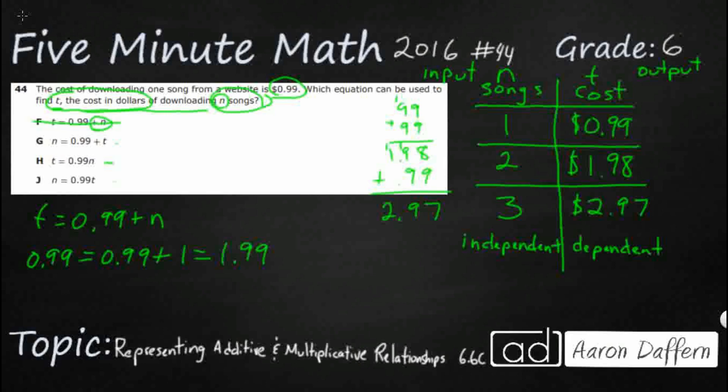Let's look at G. G has n equals 99 cents plus t, which is another 99 cents if we're looking at the first one. That's not going to work because 99 and 99 made $1.98. So it does not look like it's an additive relationship. It looks like it's multiplicative because we just added it both ways with t and n first.